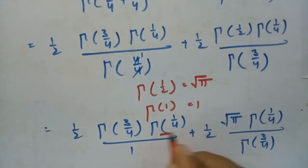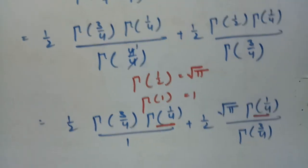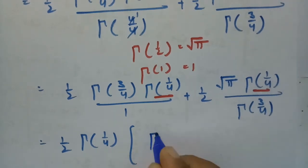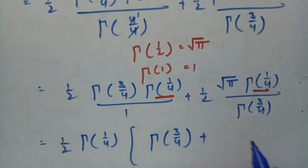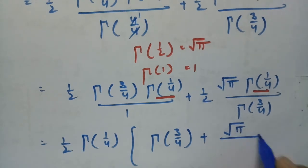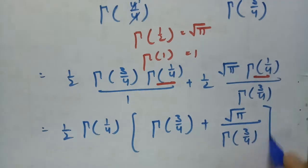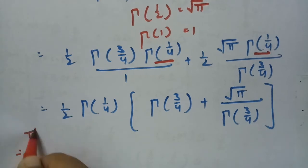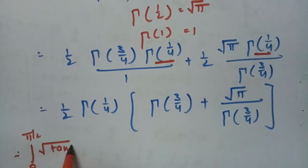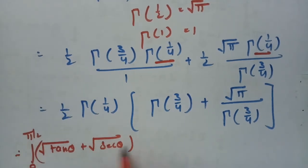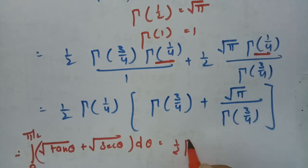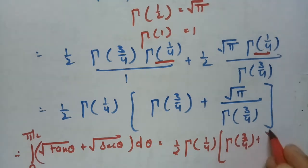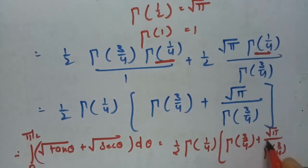Taking half times Γ(1/4) as common factor, this becomes half·Γ(1/4) times [Γ(3/4) + √π / Γ(3/4)]. Therefore, the integral from 0 to π/2 of (√tan θ + √sec θ) dθ equals half times Γ(1/4)·Γ(3/4) plus √π / Γ(3/4), which is exactly what was required to show.